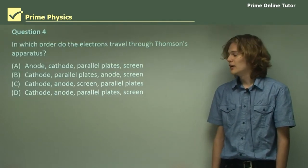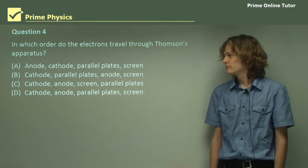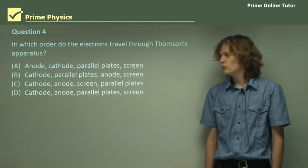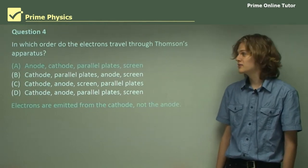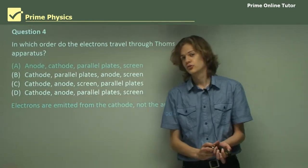Question 4. In which order do the electrons travel through his apparatus? Well, right away we can see that A is not going to be the right answer. Electrons are created at the cathode, not at the anode, so it can't be this.